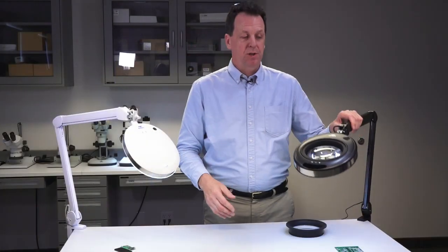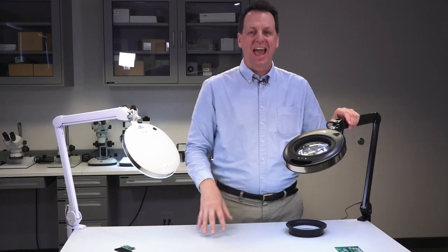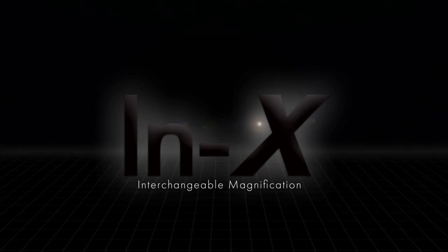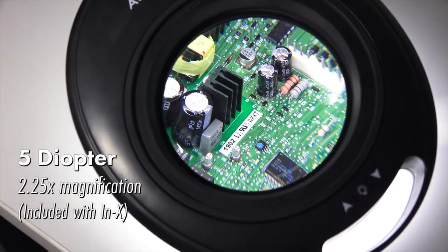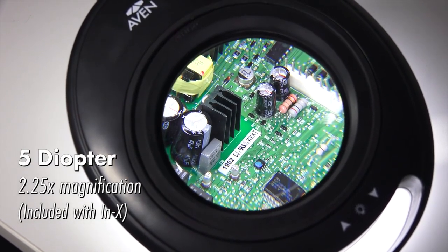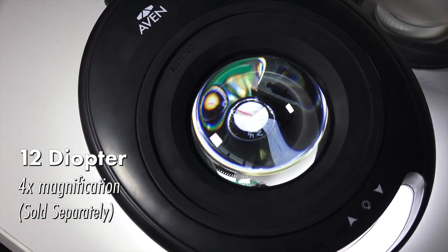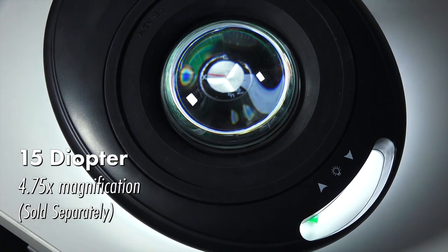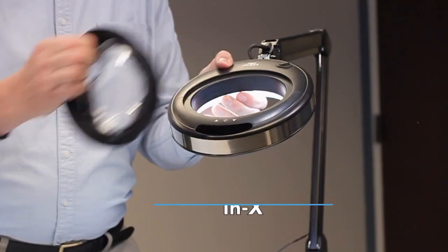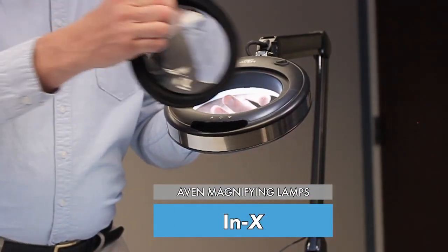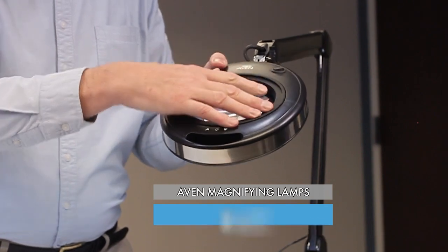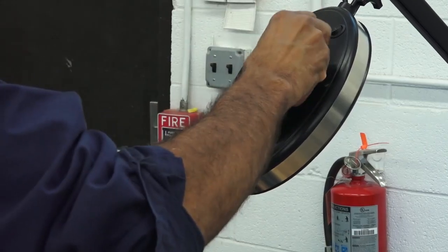The next family that I wanted to talk about is the Avon In-X that's spelled I-N-X and it's all about being an interchangeable lens. We offer four lenses for this In-X that's 5, 8, 12, and 15 diopter and the lenses pop out very easily and you can put in a different lens of a higher or lower magnification so that you're able to see what you need to see.